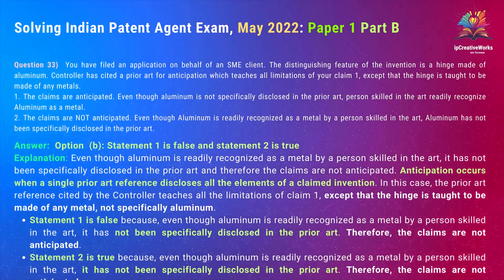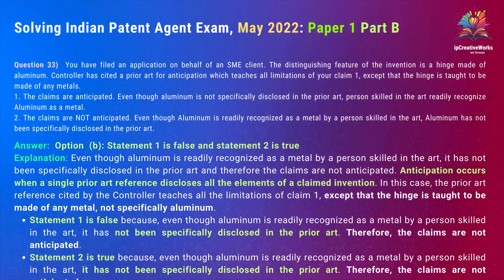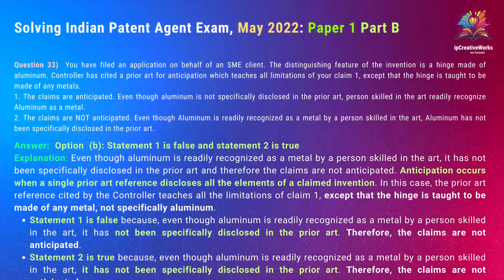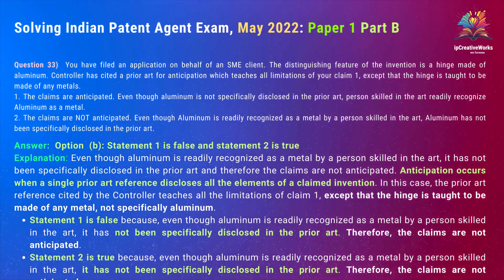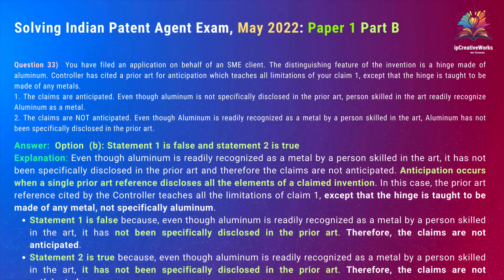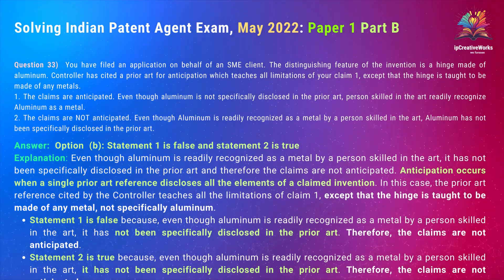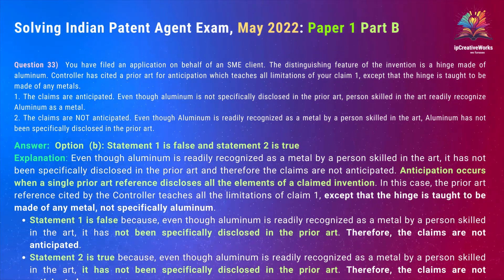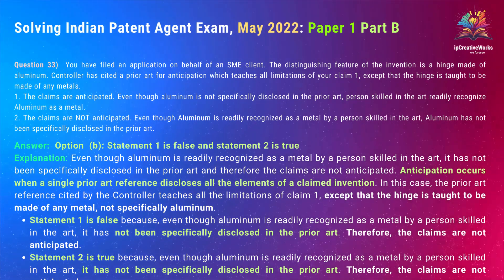Question 33: You have filed an application on behalf of an SME client. The distinguishing feature of the invention is a hinge made of aluminum. The controller has cited a prior art for anticipation which teaches all limitations of your claim. Statement 1: The claims are anticipated even though aluminum is not specifically disclosed in the prior art, as persons skilled in the art readily recognize aluminum as a metal. Statement 2: The claims are not anticipated even though aluminum is readily recognized as a metal by a person skilled in the art. The correct answer to Question 33 is Option B — Statement 1 is false and Statement 2 is true.